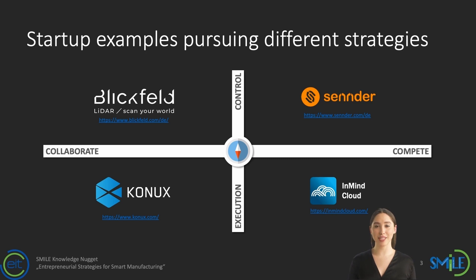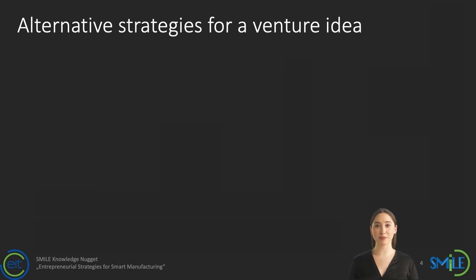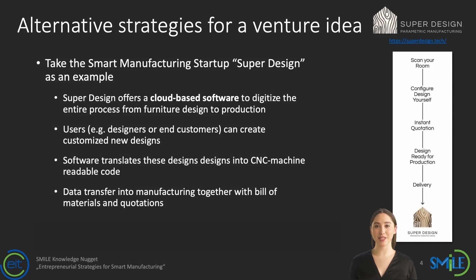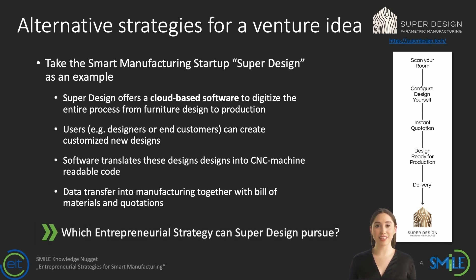These examples show how startups with diverse ideas are currently competing in the domain of smart manufacturing. Now we will use the entrepreneurial strategy compass to develop and compare alternative entrepreneurial strategies for one particular venture idea: the Estonian startup Super Design. Super Design has developed software that allows designers or customers to create customized furniture designs via a configurator interface, translating those designs into CNC machine-readable code together with price quotations based on material consumption.